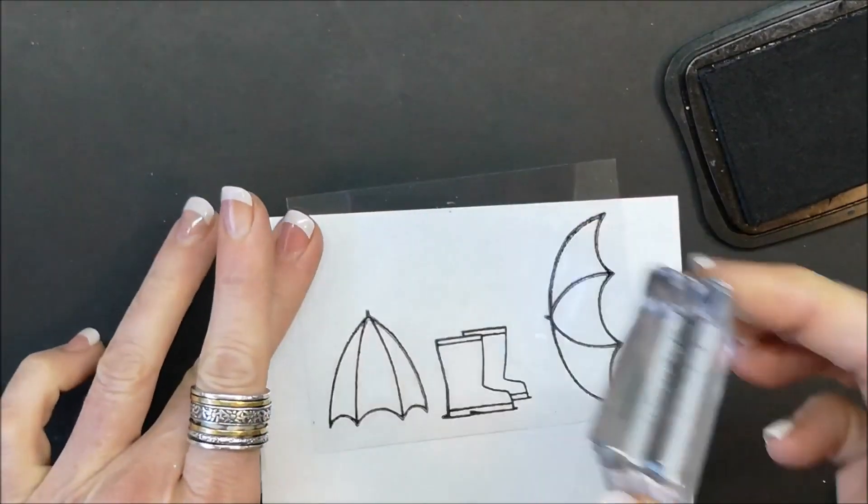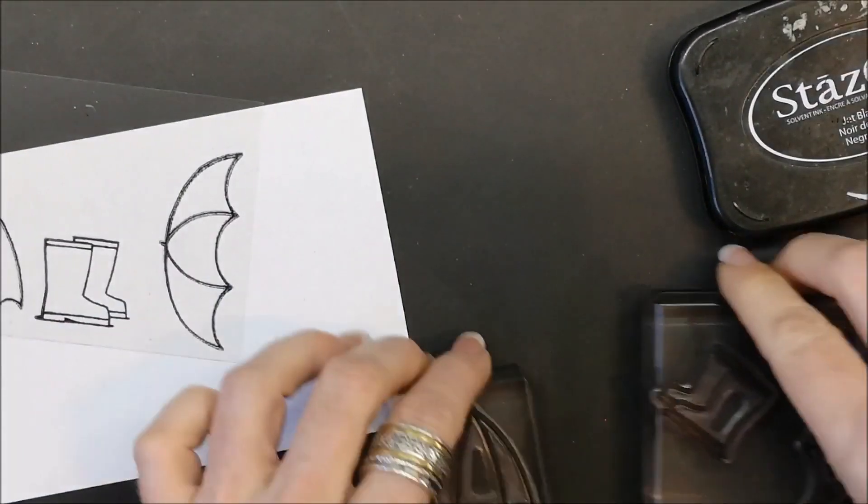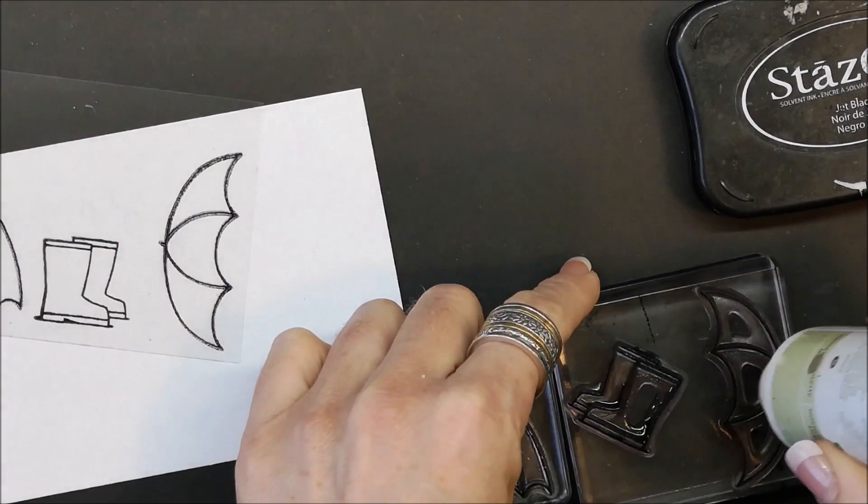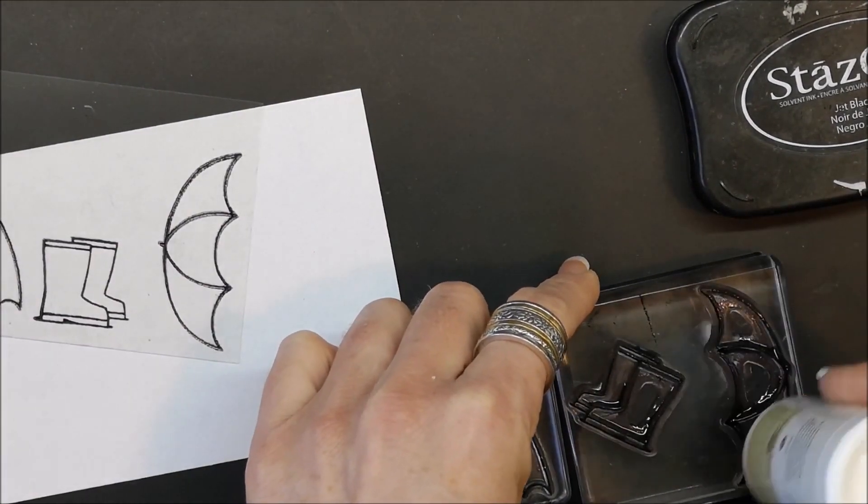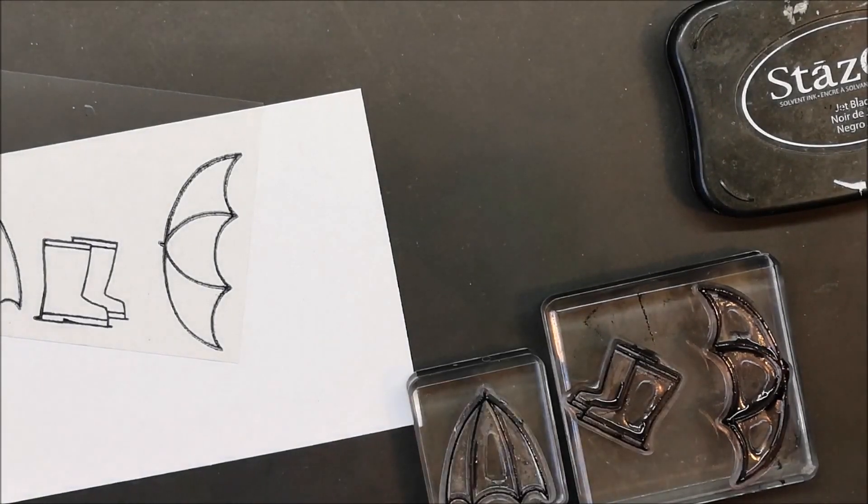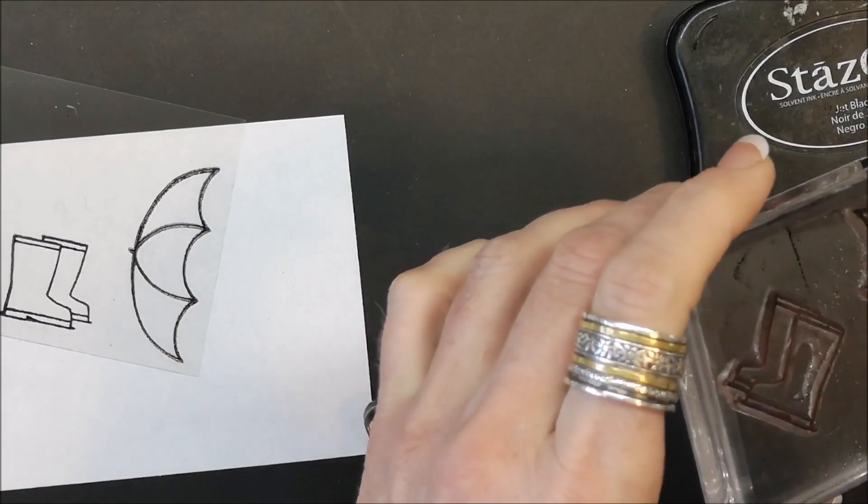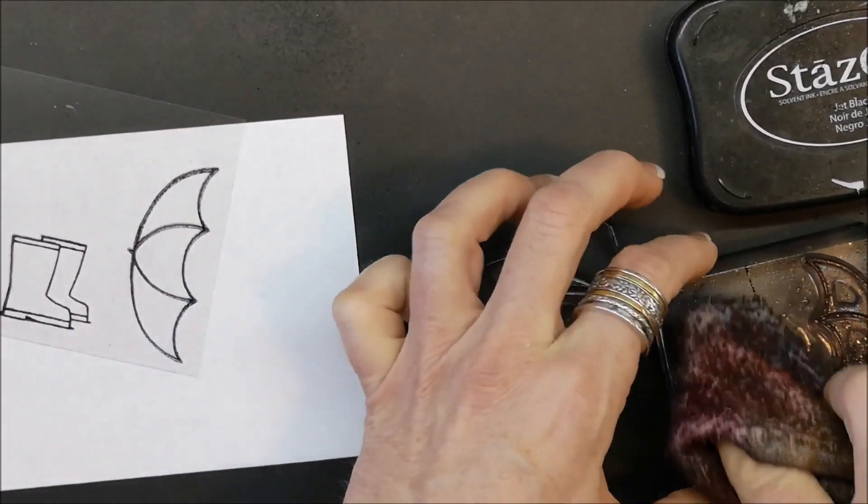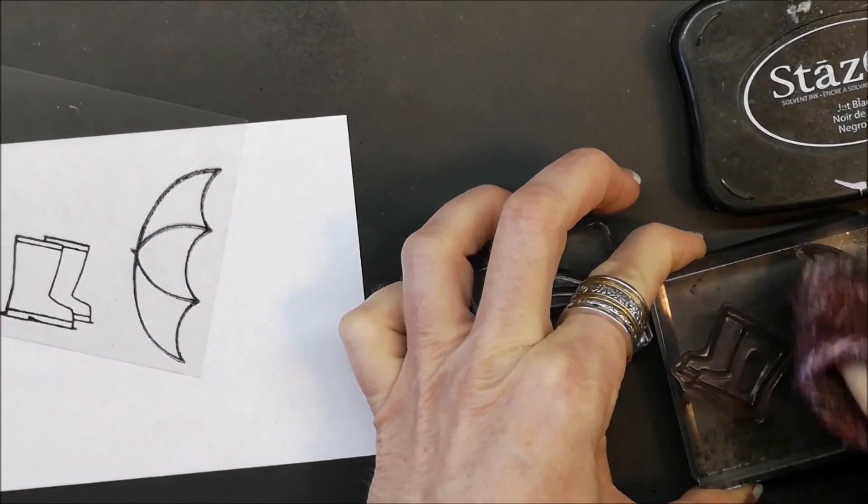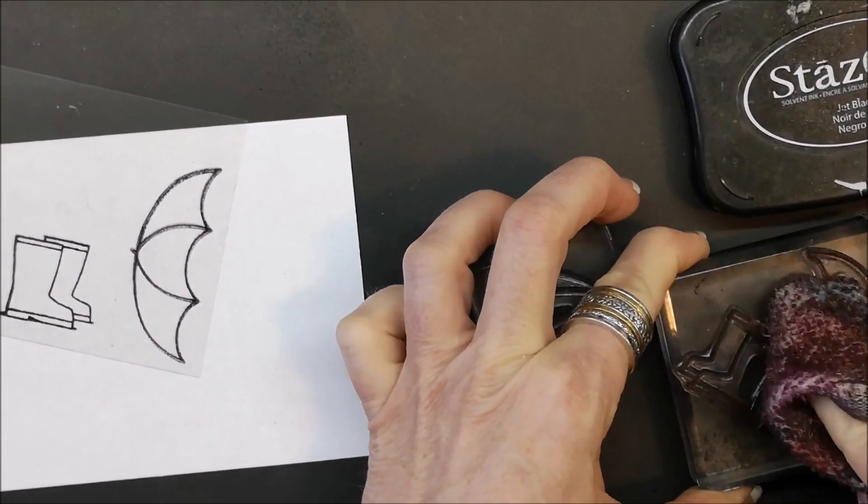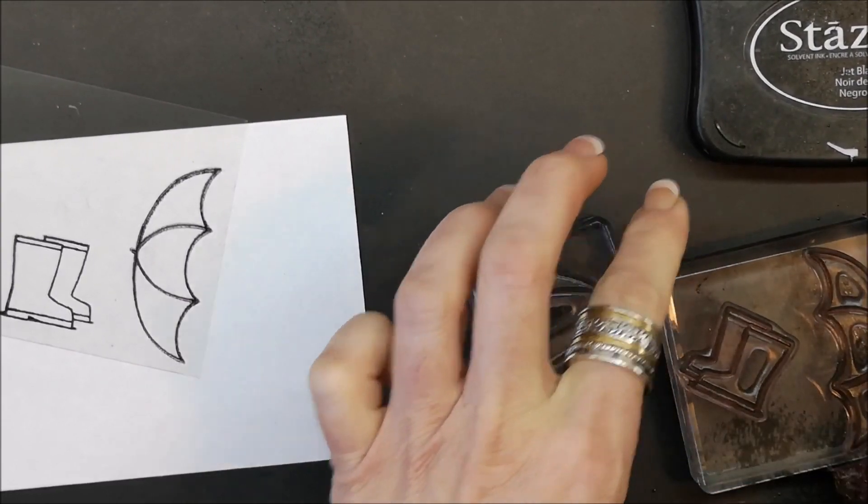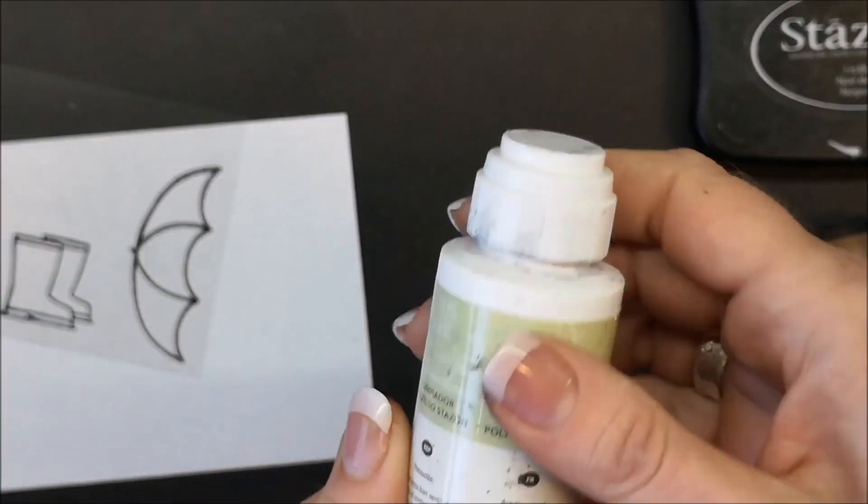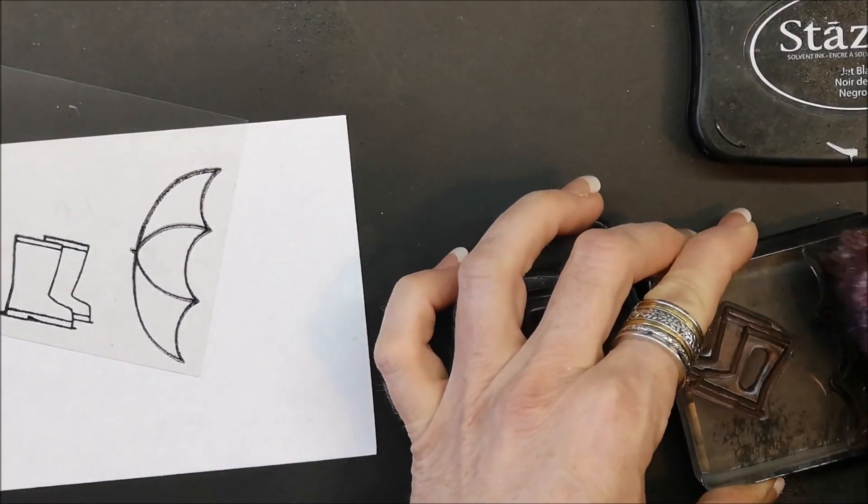Because I have StazOn on these stamps I'm going to take my StazOn cleaner and dab it on, wipe it off, and then I'm going to mist with water to make sure I've got any residue off my stamps. You really want to make sure that your stamps are cleaned right after you use StazOn on photopolymer. If you don't have StazOn cleaner I highly recommend it. It lasts a long time, this is mine and I still have lots in it.